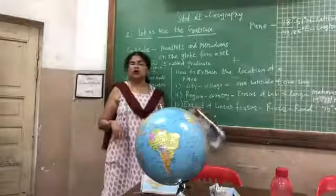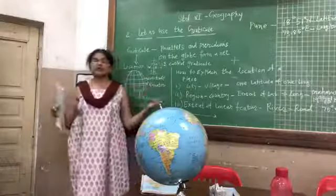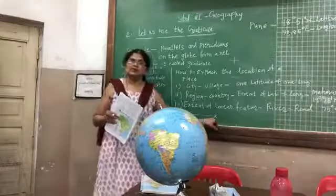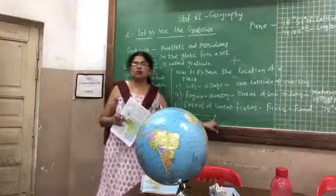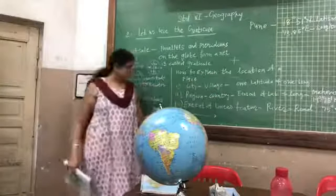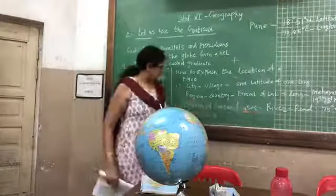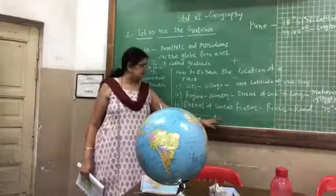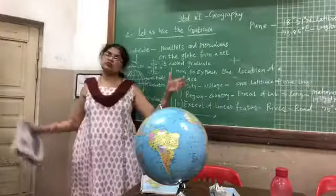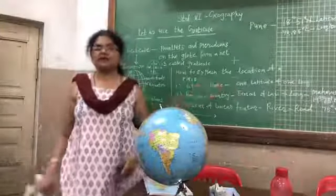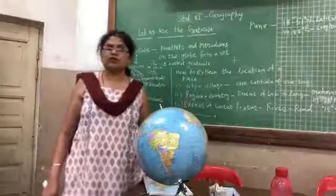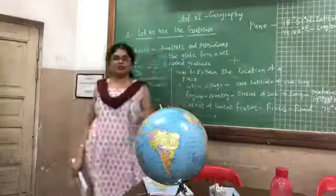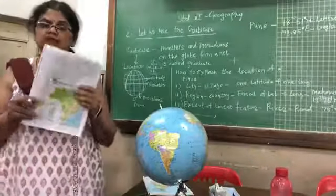For example, the river Ganges: we have to give the extent from where it originates at Gangotri and where it joins the sea. This is the linear expansion — how much is the spread, how much is the length of the river. In a similar way, canals also have a breadth and a length. We have the Panama Canal and the Suez Canal, which are important for navigation. The extent of linear features is explained using two different coordinates, from the origin to the end.